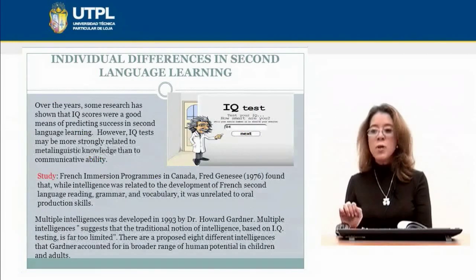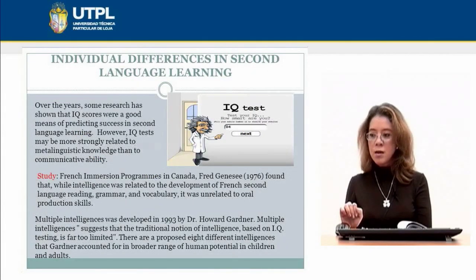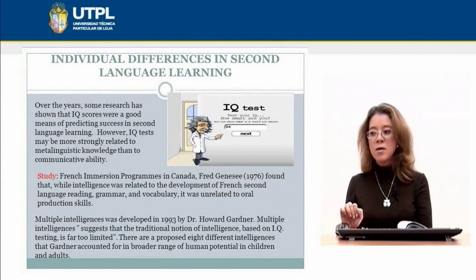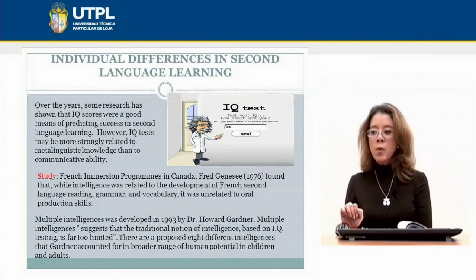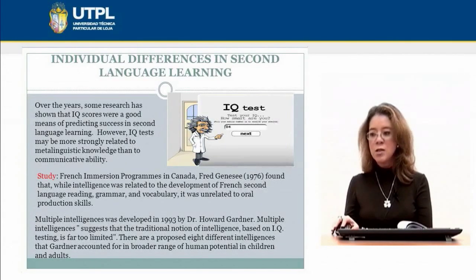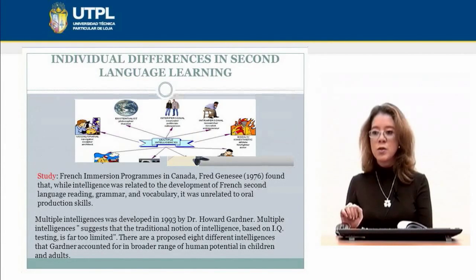The theory of multiple intelligences was developed by Howard Gardner in 1993. He argues that the traditional notion of intelligence based on IQ testing is far too limited. He proposed eight different intelligences that account for a broader range of human potential in children and adults.